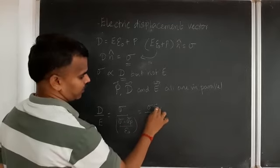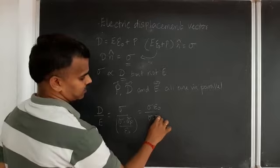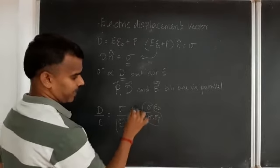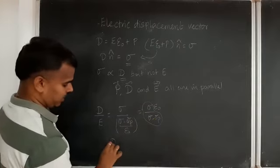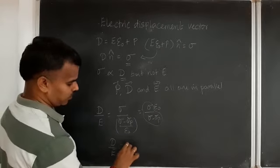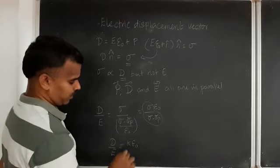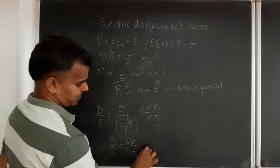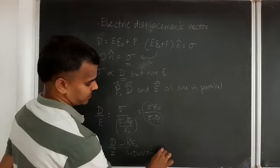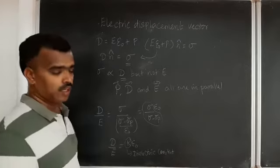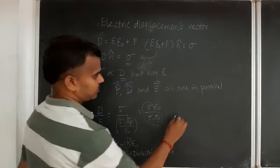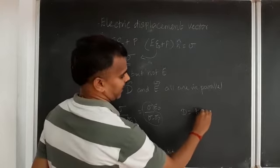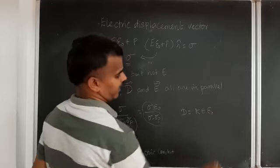So we get σ·ε divided by (σ minus σ_P). And this term — somewhere else we have studied this — D/E = K·ε. This K is called the dielectric constant. So from that equation we can write D = K·ε·E.